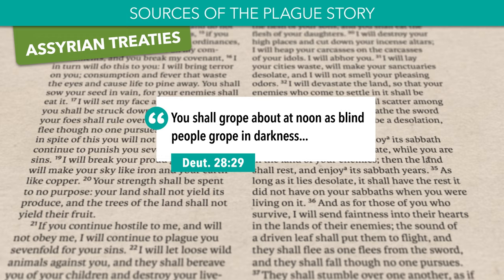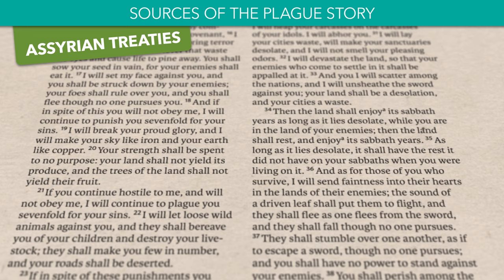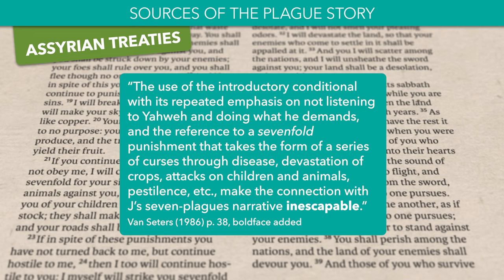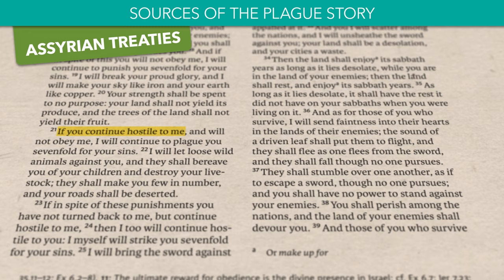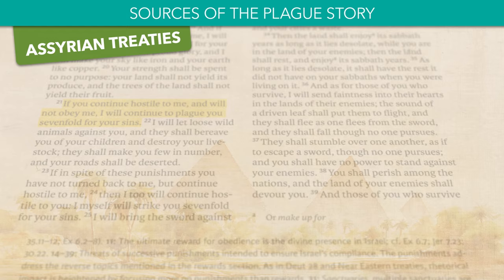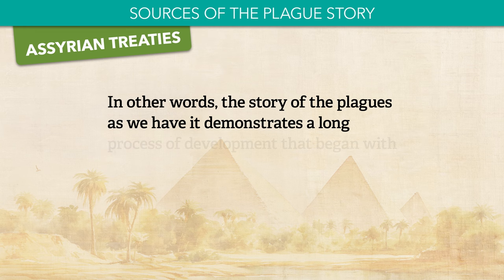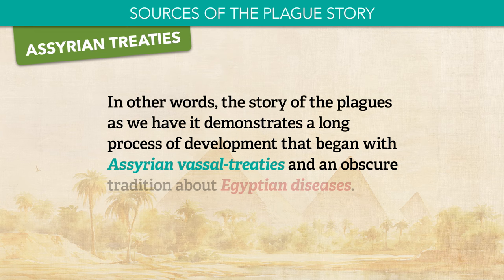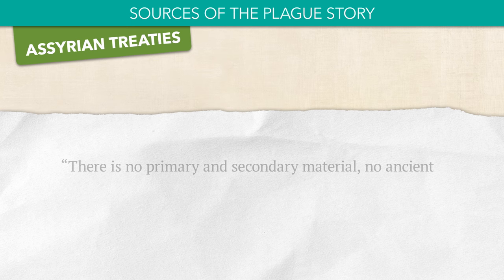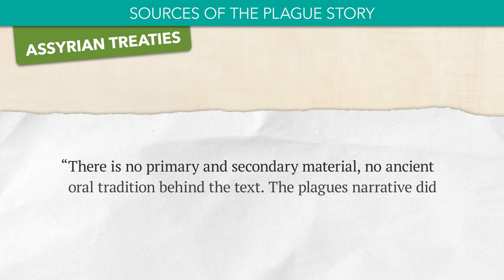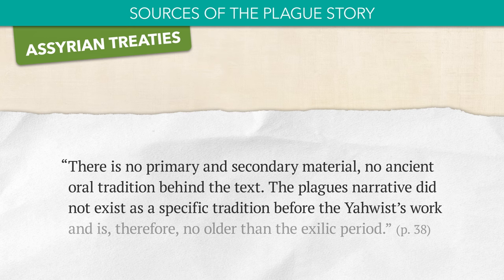What's particularly striking is that Leviticus promises a sevenfold curse to those who remain disobedient — this makes the connection with the Yahwist's story of seven plagues inescapable, says Van Cedars: 'If you continue hostile to me and will not obey me, I will continue to plague you sevenfold for your sins.' In other words, the story of the plagues demonstrates a long process of development that began with the Assyrian vassal treaties and an obscure tradition about Egyptian diseases. Van Cedars concludes: there is no primary and secondary material, no ancient oral tradition behind the text. The plague narrative did not exist as a specific tradition before the Yahwist's work and is therefore no older than the exilic period.